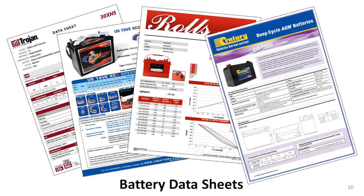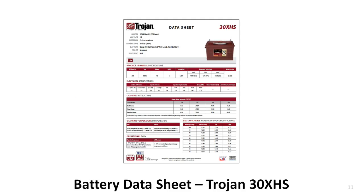Technical data sheets are intended to provide all the information required for buyers to make good decisions based on their needs. Not all data sheets are created equal — some are better than others. Some of the better ones I have found are from Trojan Battery Company. They're not perfect in my opinion, but they're good enough that I will use one as a guide to help explain how to understand lead-acid battery specifications. I won't cover everything in the data sheet at this time, but I will tackle the most timely parts.